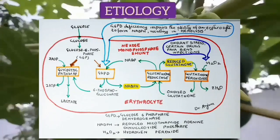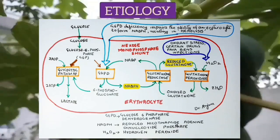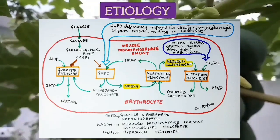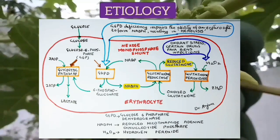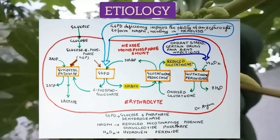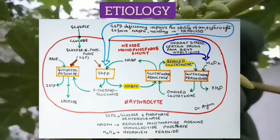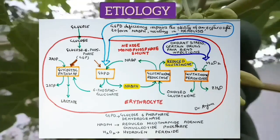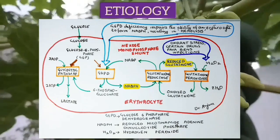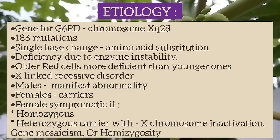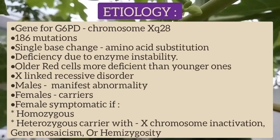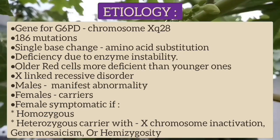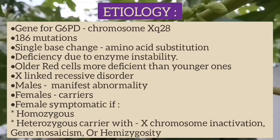G6PD is an important enzyme of the hexose monophosphate shunt. Approximately 10% of glucose taken by the RBC passes through this pathway to provide reduced nicotinamide adenine dinucleotide phosphate, also called NADPH. This NADPH is necessary for the conversion of oxidized glutathione to reduced glutathione. Reduced glutathione is essential for the physiological inactivation of oxidant compounds such as hydrogen peroxide generated within the RBC, and also helps inactivate externally introduced oxidants such as certain drugs, infections, and fava beans.